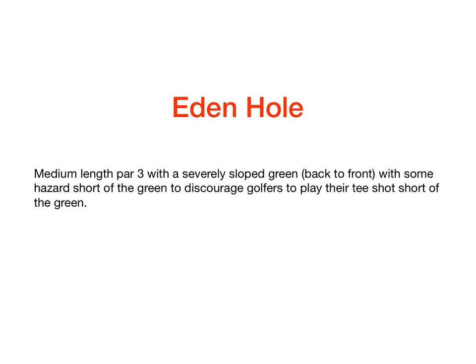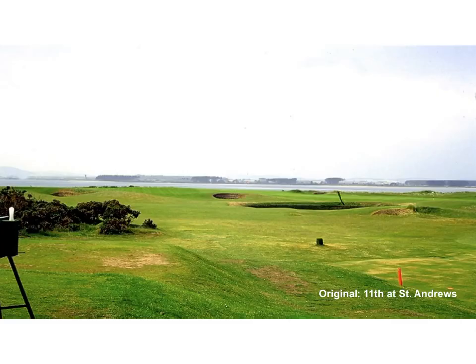The Eden type of golf holes are medium length par threes, which would fall in the 160 to 180 yards in length. The green is sloped from back to front with two huge bunkers guarding the front of the green. The original Eden hole is the eleventh hole at St. Andrews, which is a par 3, 72-yard hole.